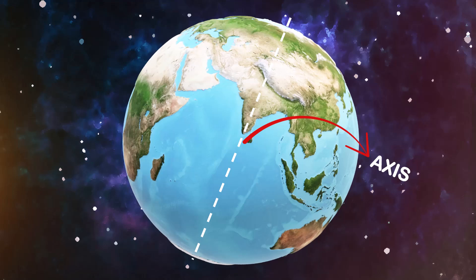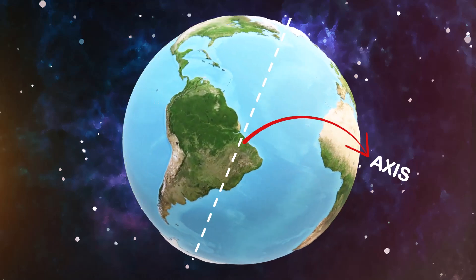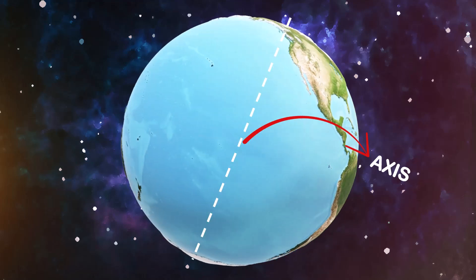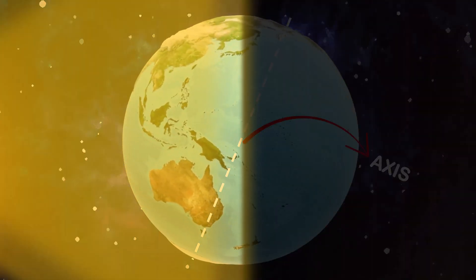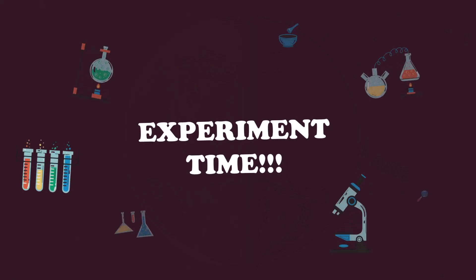Now the earth spins on its axis. This is called rotation. It makes day and night. Let's see how with a small experiment.